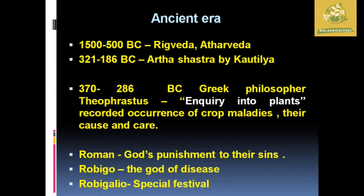In the Ancient Era, plant diseases were noted in the Rigveda and Ayurveda, dated around 1500 to 500 BC, and in the Arthashastra by Kautilya, written around 321 to 186 BC. The Greek philosopher Theophrastus described the occurrence of crop maladies, causes, and care of diseases during 370 to 286 BC. The Romans considered plant diseases as God's punishment, worshipping Robigo, the god of diseases, with a special festival to reduce diseases.